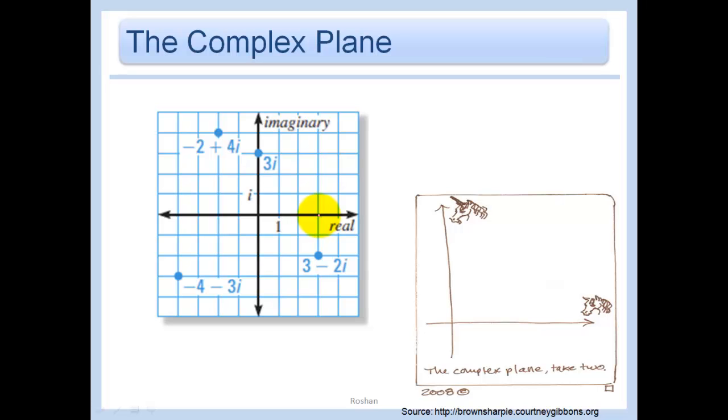Something like 3 minus 2i means I go over 3 on the real axis and I go down 2 on the imaginary axis. Negative 2 plus 4i, negative 2 on the real axis, 4 on the imaginary axis. And minus 4 minus 3i would just be negative 1, 2, 3, 4 on the real axis and down 3 on the imaginary axis. So not real hard to graph these at all.